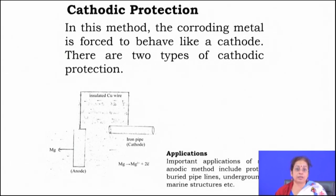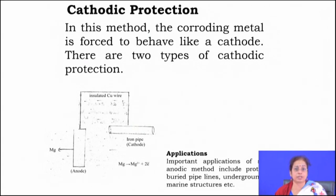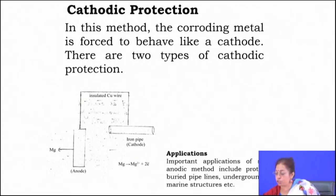Any kind of aqueous corrosion can be taken care of by cathodic protection — whether it is general corrosion, pitting corrosion, stress corrosion cracking, or hydrogen embrittlement. By cathodic protection you make your component act as cathode, and by this process you minimize corrosion and can get rid of the problem to a large extent.